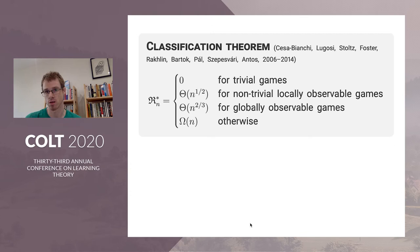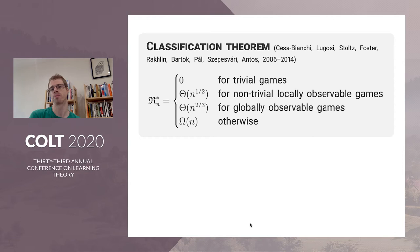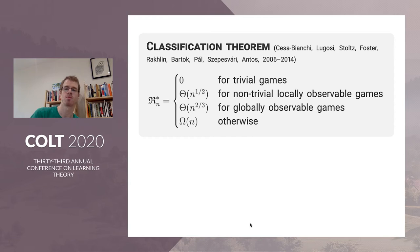More or less the defining characteristic of globally observable but not locally observable games is when the learner has to play some informative action to figure out which of two other actions are optimal — and then it can pay a big price for doing that. Whereas in a bandit game, you just play those two actions, and if they're close it's hard to figure out which is better but the price you pay is less. In a globally observable game you might have to pay a big price to figure out which of two outcomes are better.